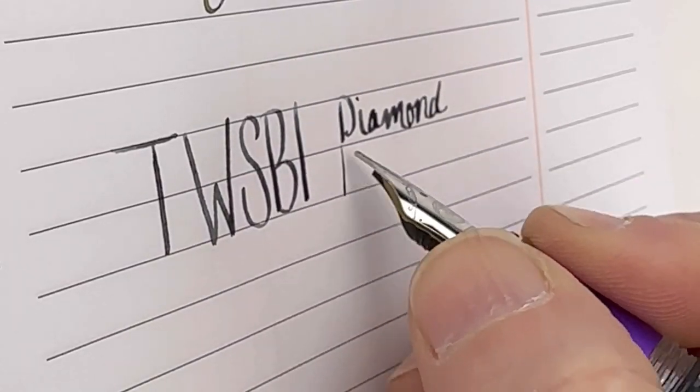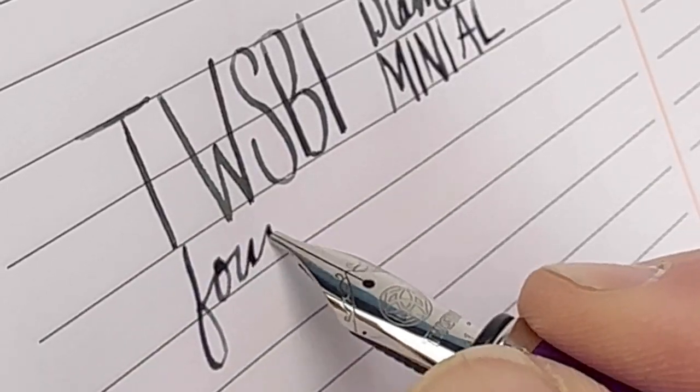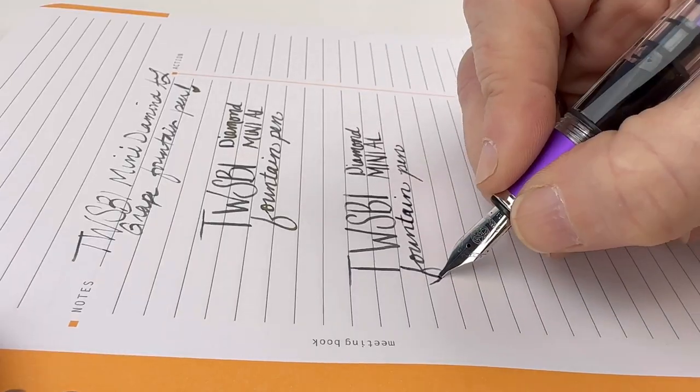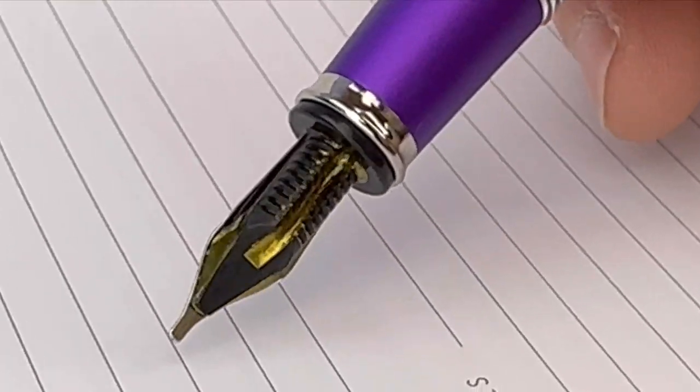I pulled a stub nib out. So this is the TWSBI Diamond Mini AL in grape using a stub nib. But the TWSBI's are available in the standard sizes in your extra fine, fine, medium, broad, and stub.